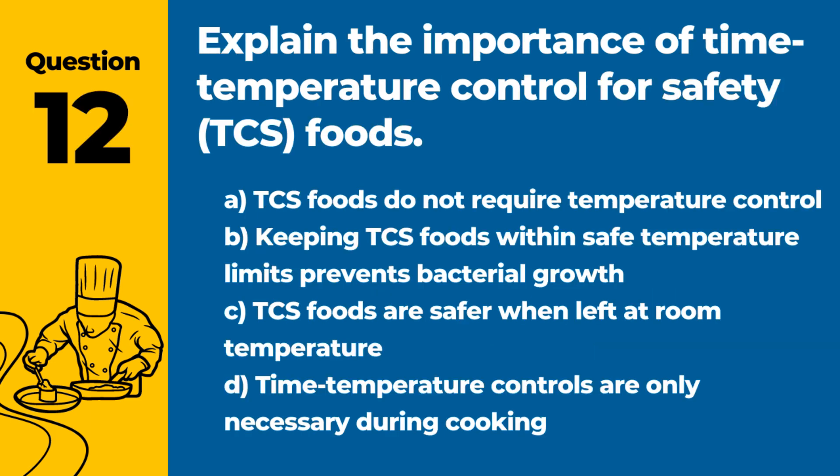Question 12. Explain the importance of time-temperature control for safety (TCS) foods. Answer: B. Keeping TCS foods within safe temperature limits prevents bacterial growth. TCS foods are perishable items that need proper time and temperature control to prevent foodborne illness.